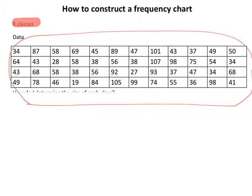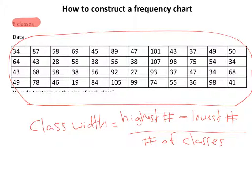So the first thing that we need to do when we are constructing a frequency chart is to figure out our class width or class size. And the formula to do that is class width equals highest number minus lowest number divided by the number of classes.